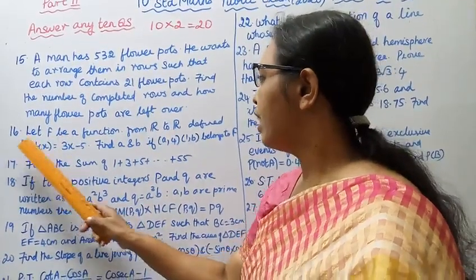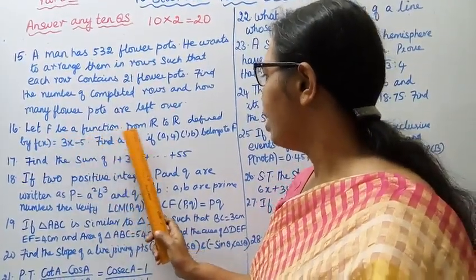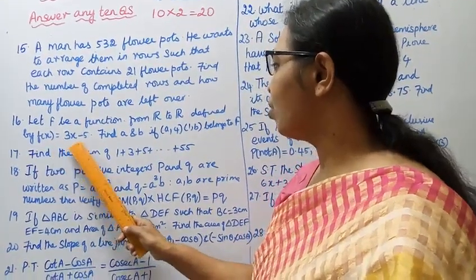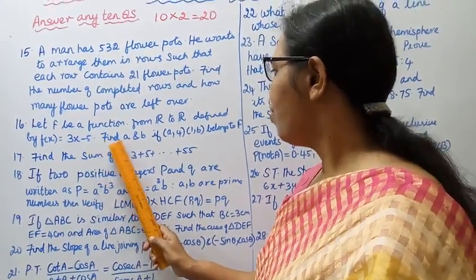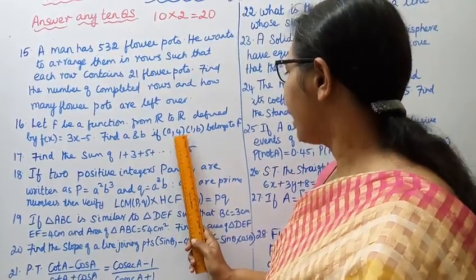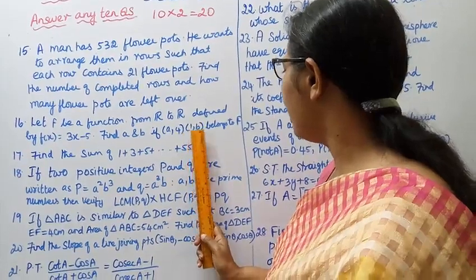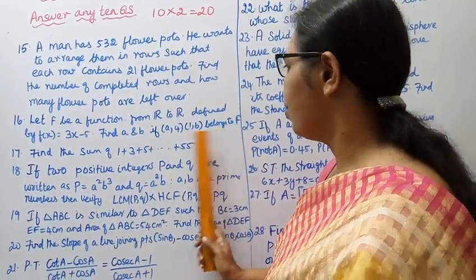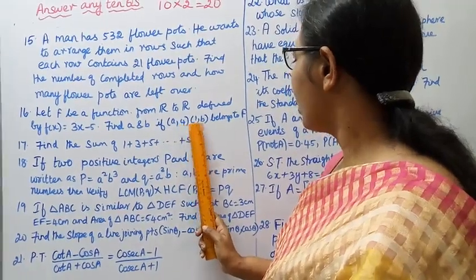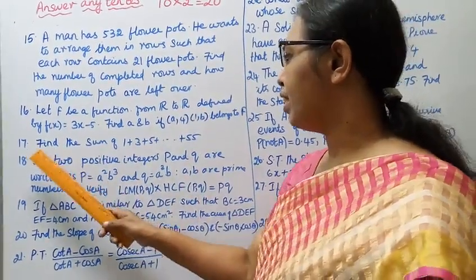Question 16: Let f be a function from R to R defined by f(x) = 3x - 5. Find a and b if (a,4) and (1,b) belong to f.